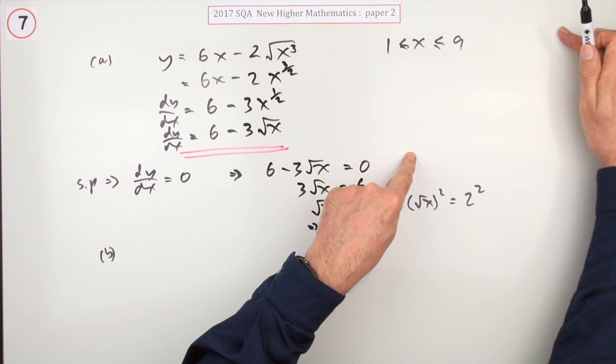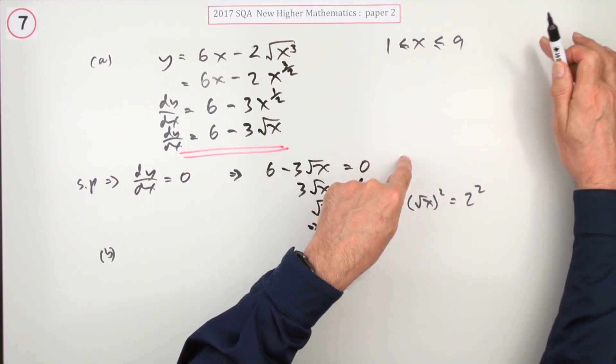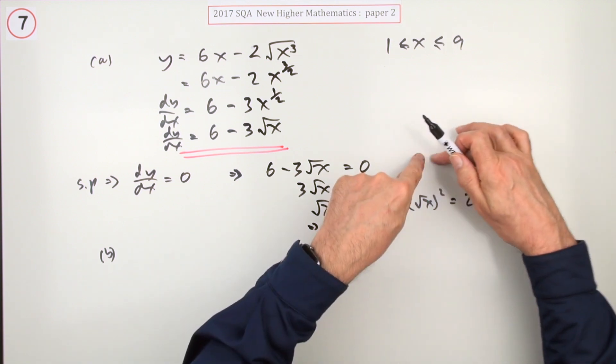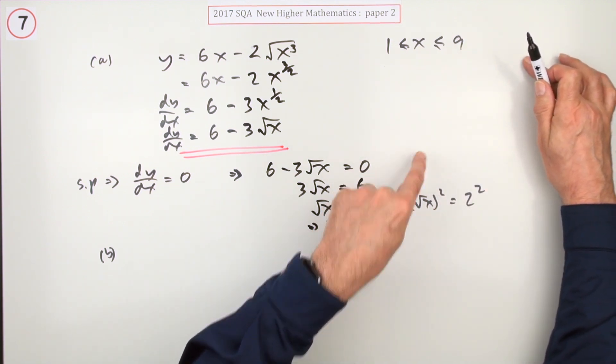So for that portion of the graph, the main contenders for the maximum and minimum are the two endpoints, one and nine. The only way something in between could exceed one of those would be if it was a stationary point.